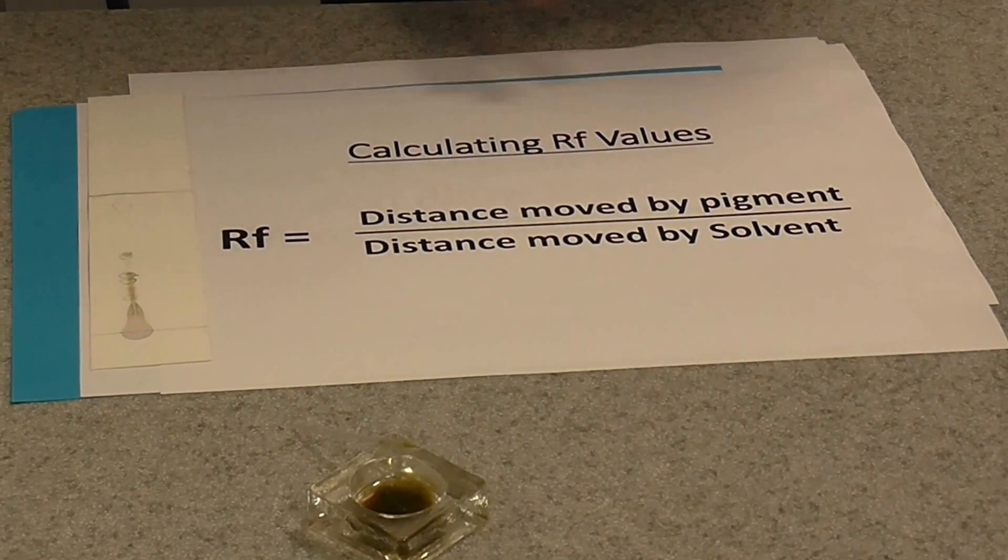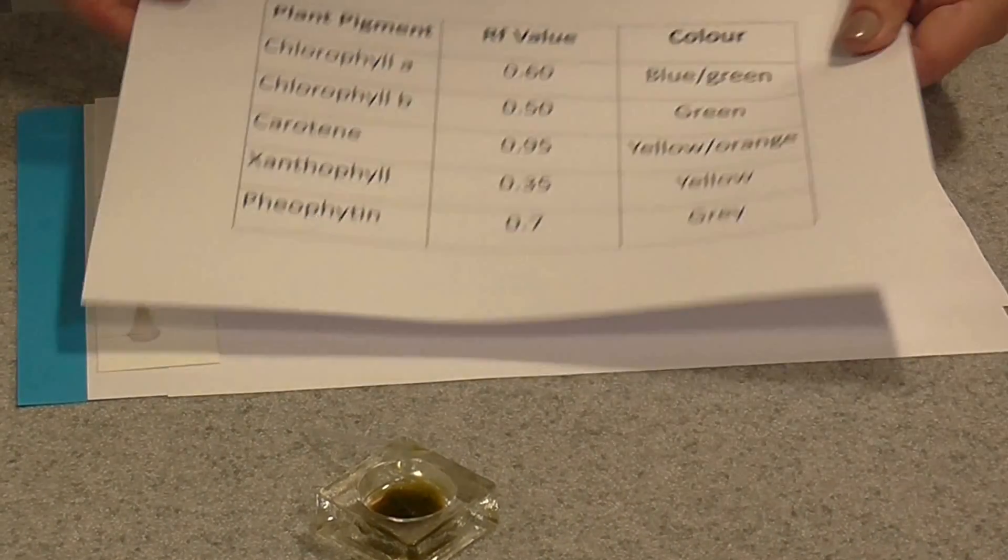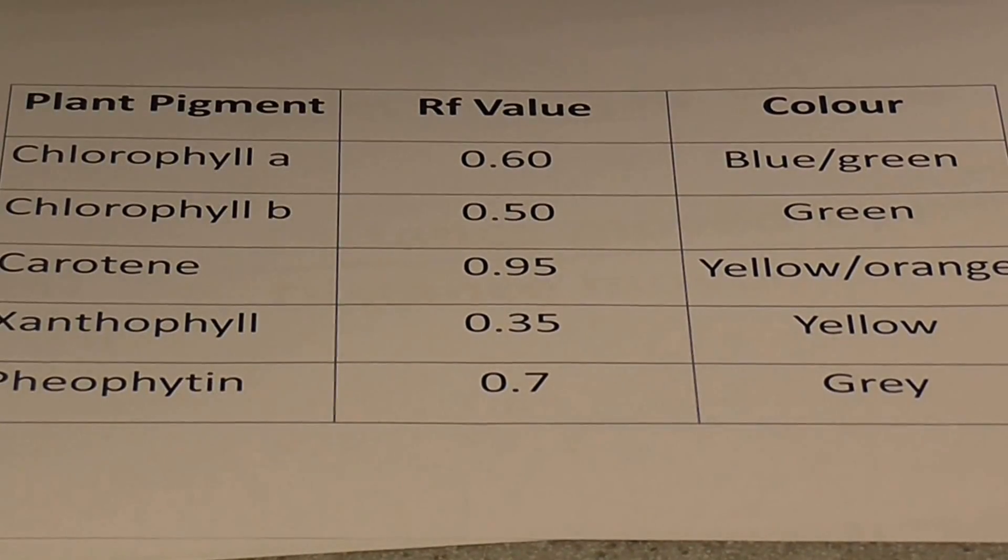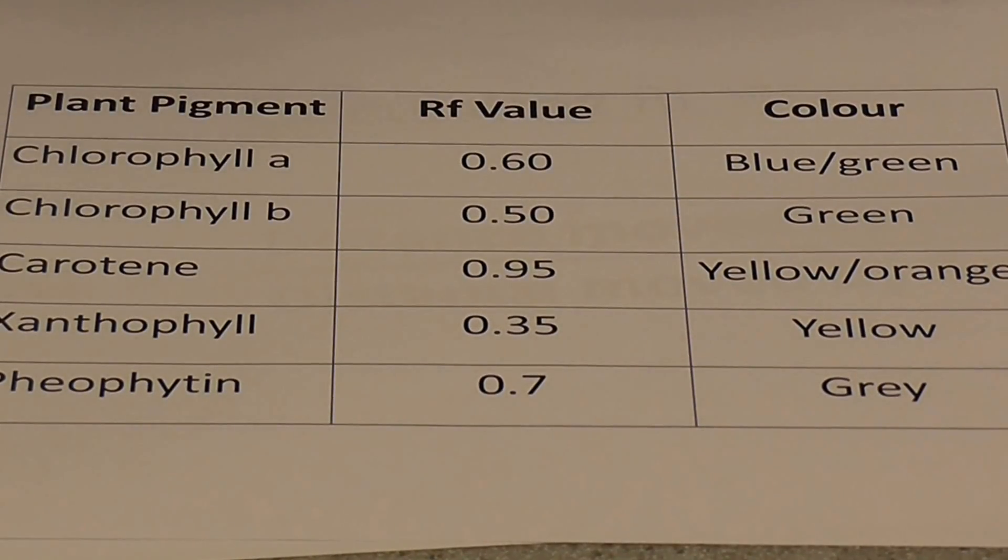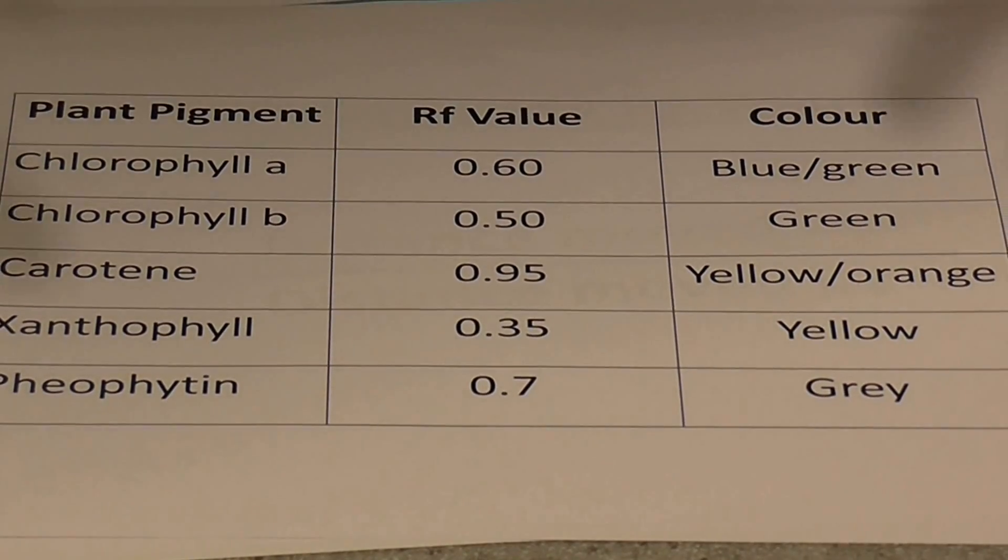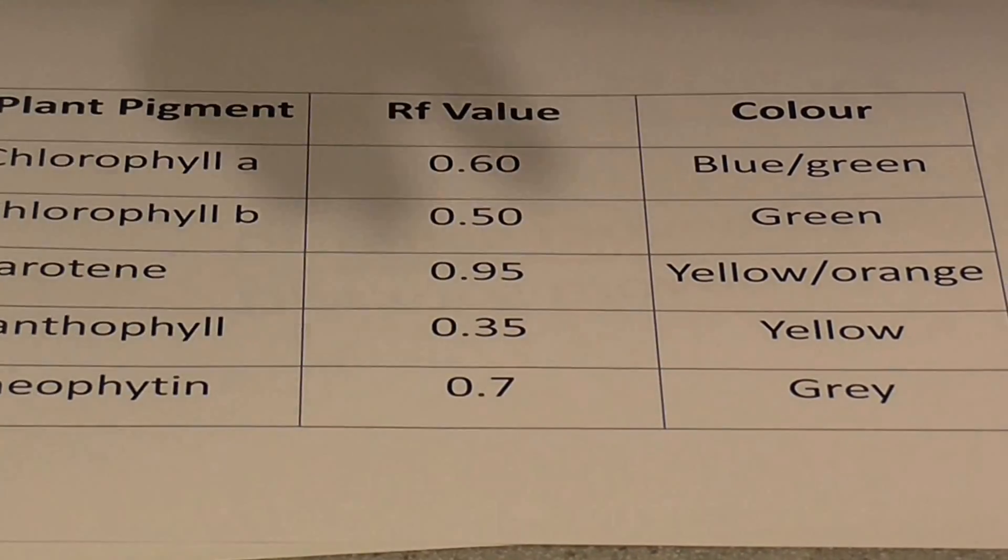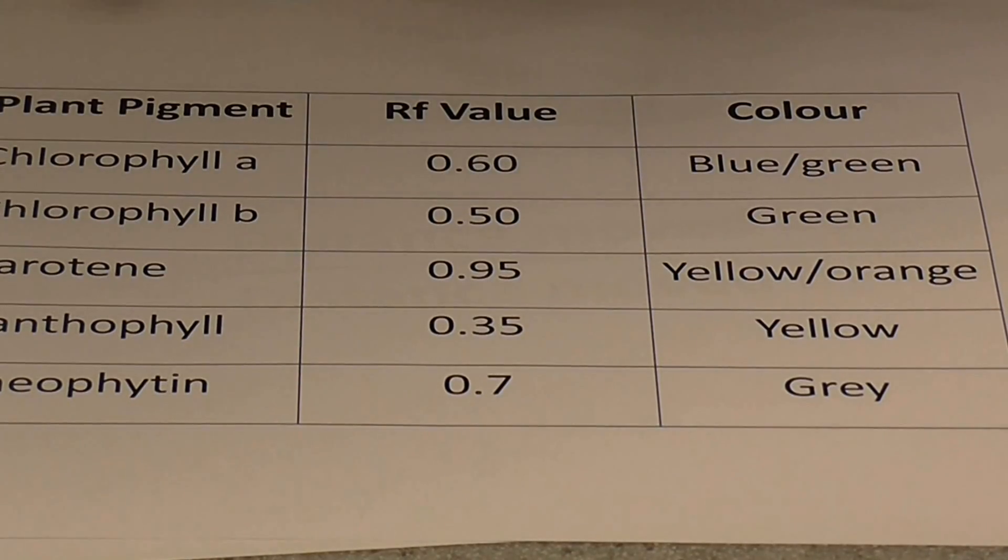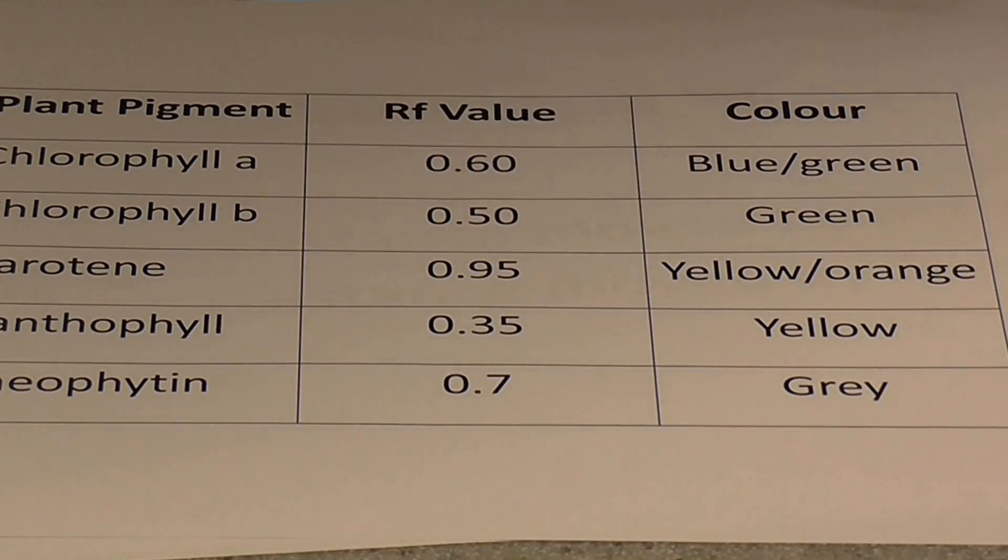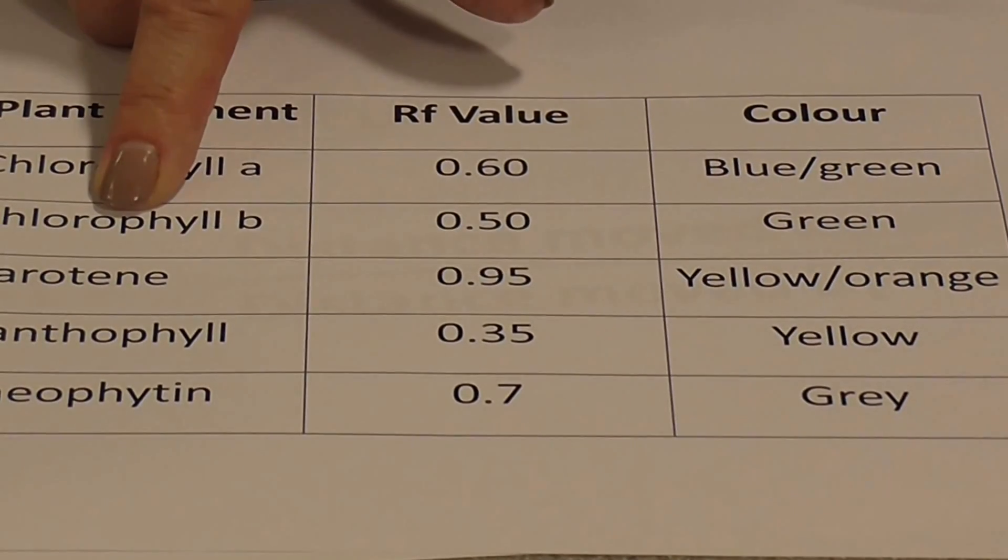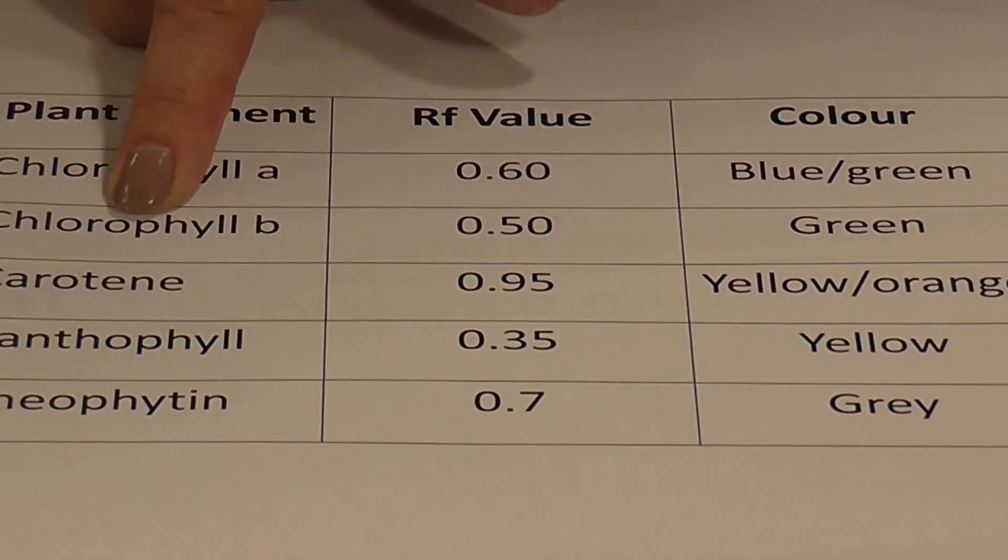Now that on its own means nothing. So what you have to do then is compare your RF values to standard RF values for this technique. So you'll see, often you don't get exactly the same value, but you're looking for the closest one. So for example, if we got a value of 0.50, a greenish spot, we would know that that was probably chlorophyll B.